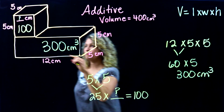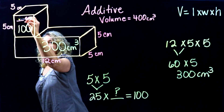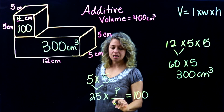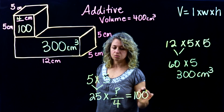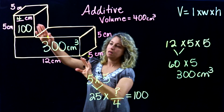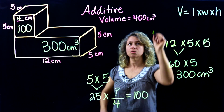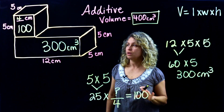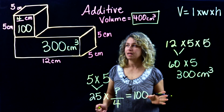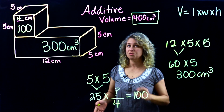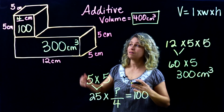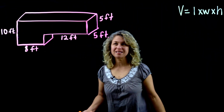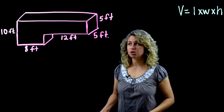What number times 25 will equal 100? It's 4. So we fill in the missing dimension with 4: 25 times 4 equals 100, and 100 plus 300 equals 400. This is another way to find the additive volume when you're given the total and have a missing dimension.